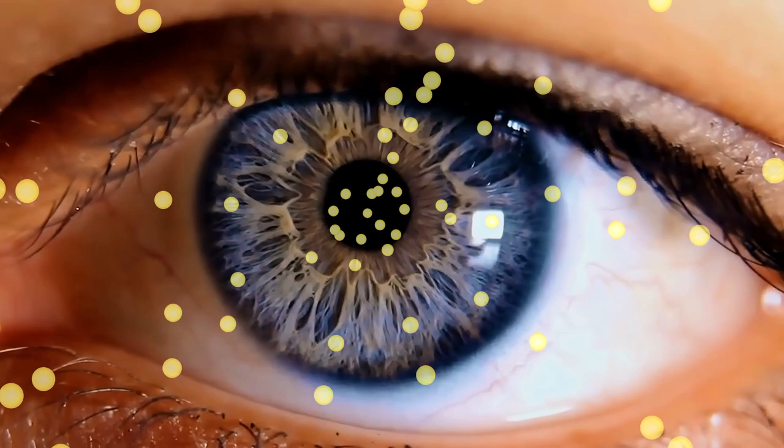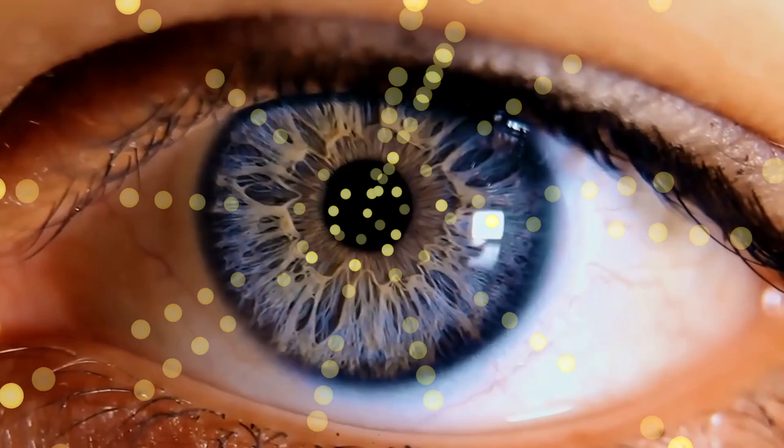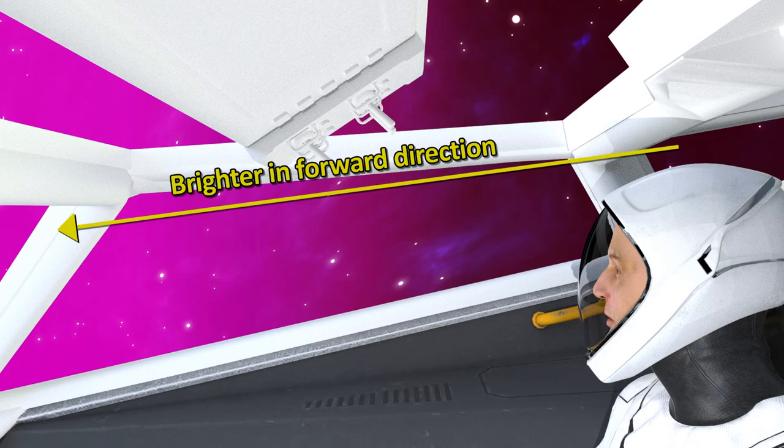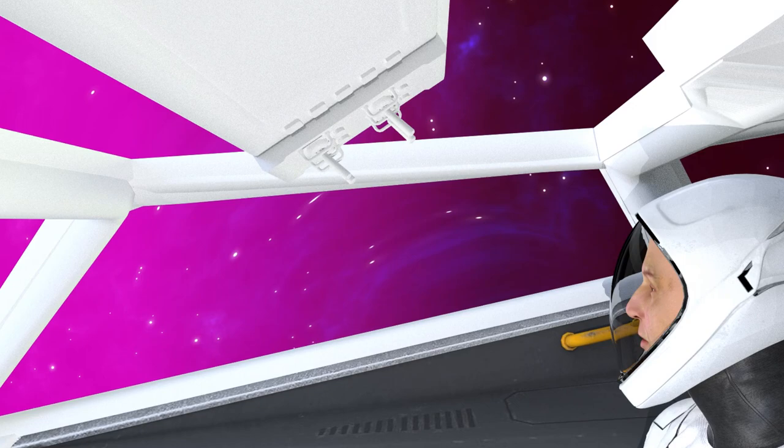Light intensity is literally just the number of photons hitting our eyes. And if you are going very fast forward, then you are racing into more photons. So naturally, as you hit more photons in the forward direction, things will appear brighter. But on the other hand, behind you, you are racing away from the photons, so things appear dimmer.